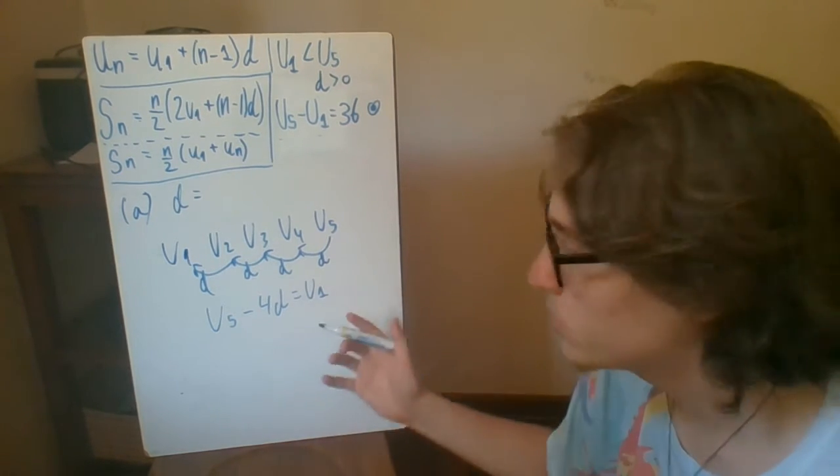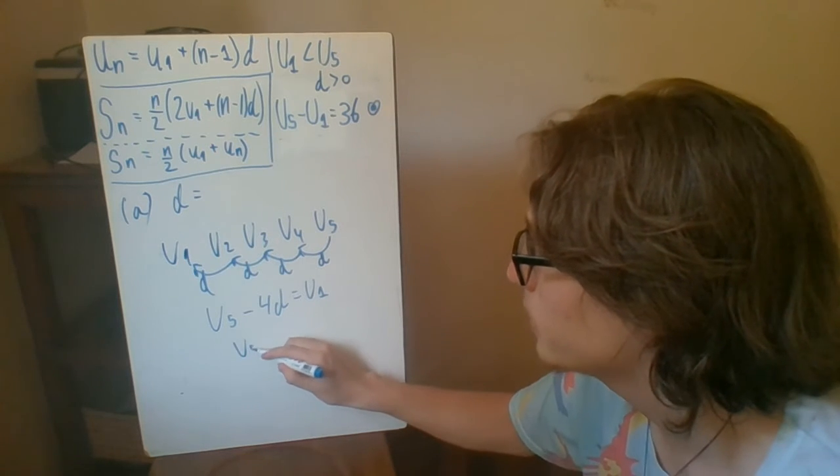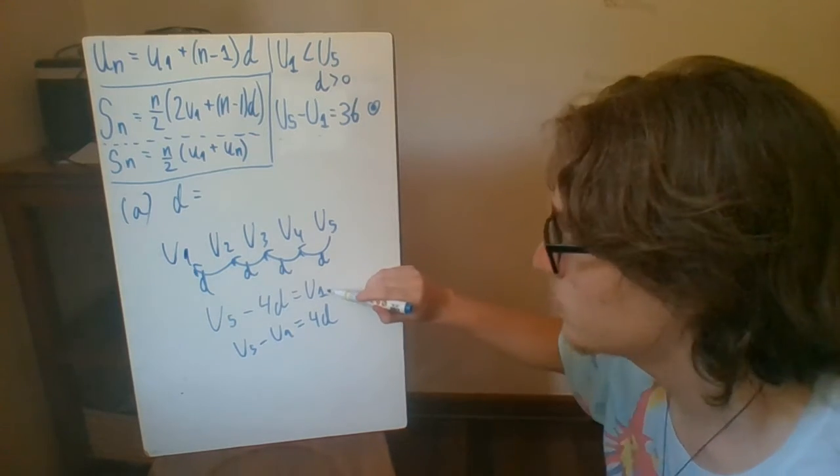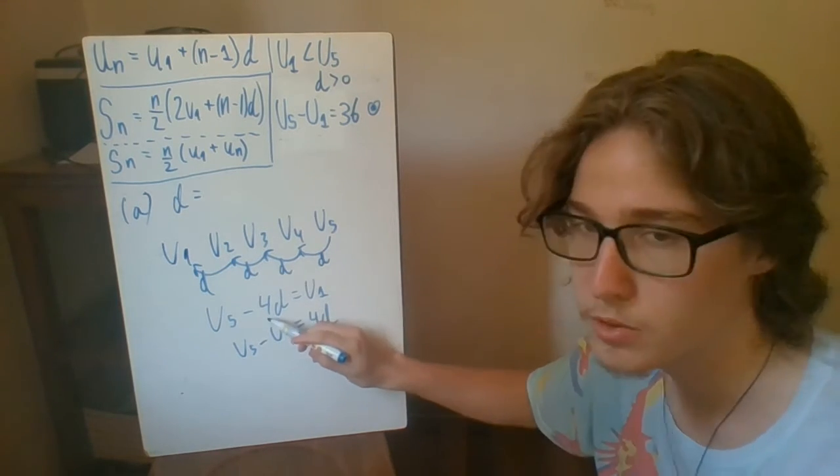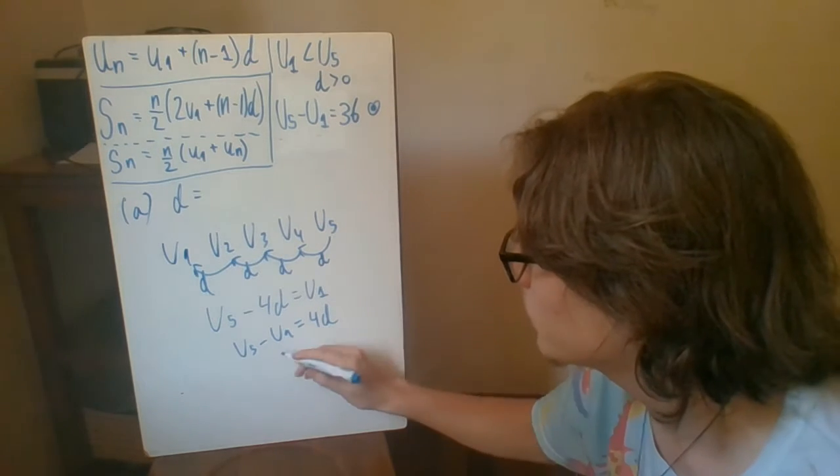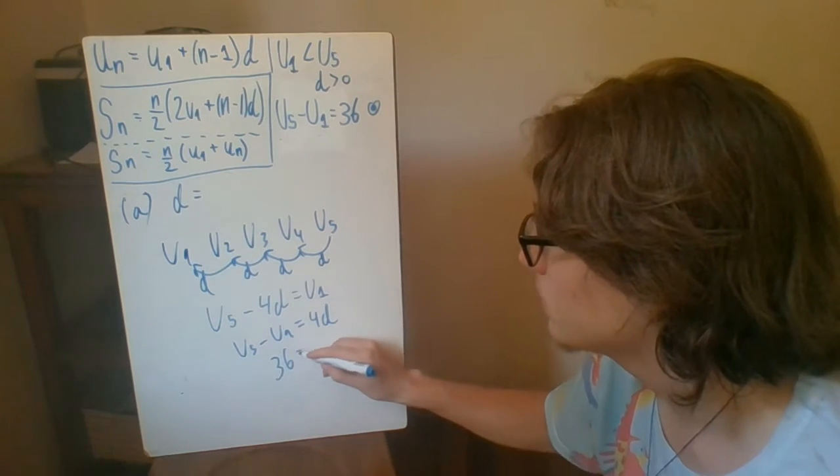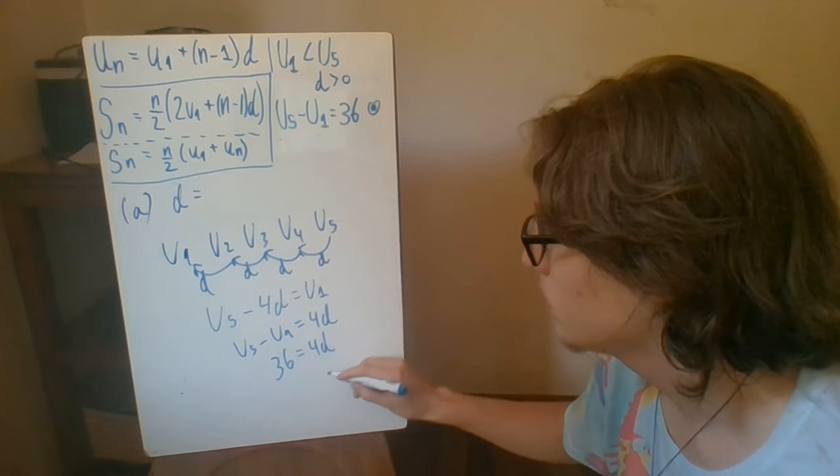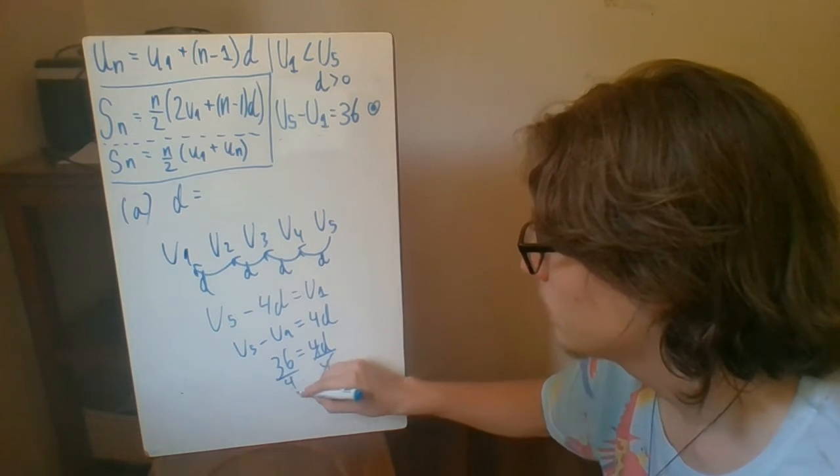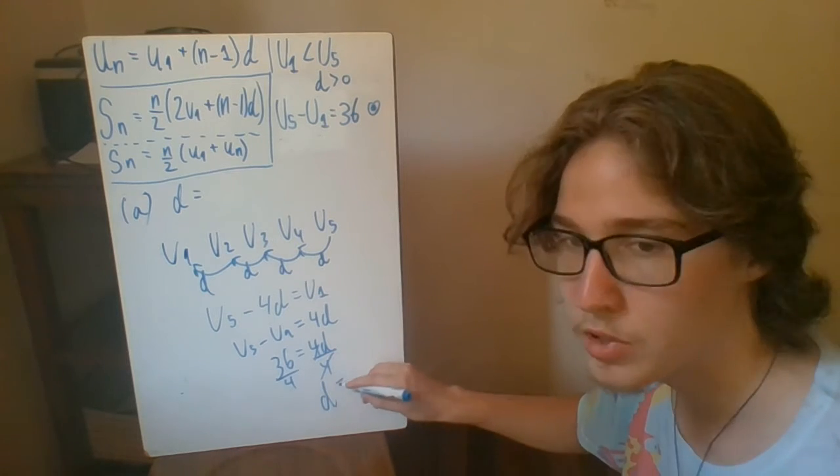If I change these numbers around a little bit and leave u5 minus u1 equals 4d, by doing minus u1 on both sides and plus 4d on both sides, I can use what I got earlier. So here I have 36 equals 4d. If I divide both sides by 4, I end up with d being equal to 9.